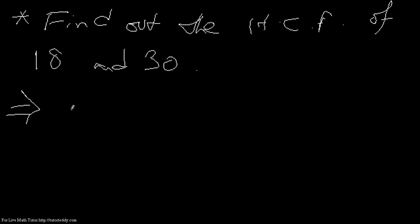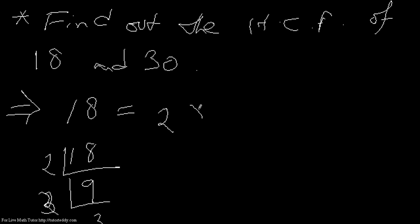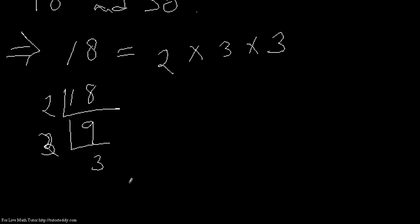How can we factor out 18? Let me do it this way: 2 times 9 equals 18, then 3 times 3 equals 9. So I can write 18 = 2 × 3 × 3.